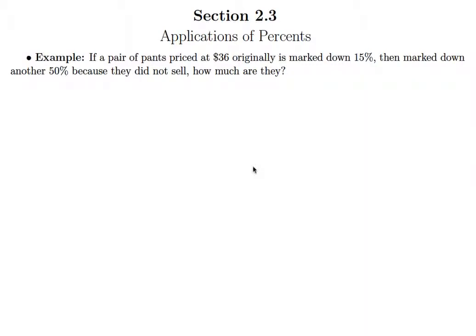In this lesson we're going to take a look at another example involving discounts. It says if a pair of pants priced at $36 originally is marked down 15%, then marked down another 50% because they did not sell, how much are they?